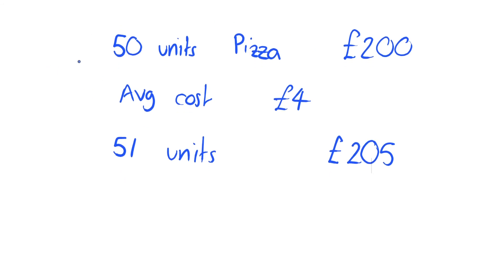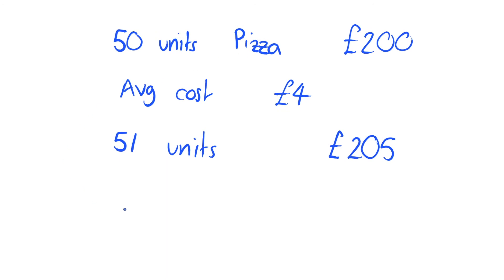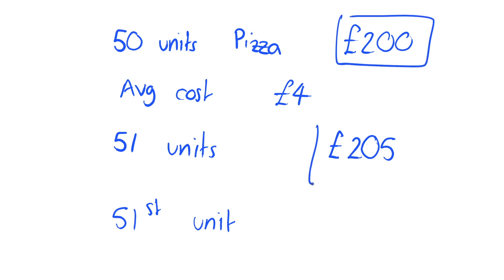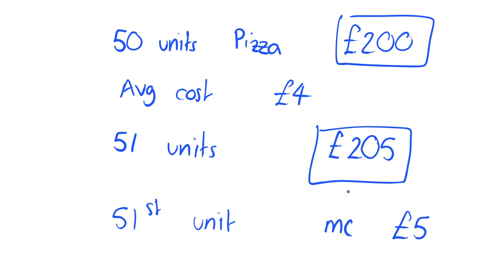So, what is the marginal cost — what is the cost of producing the 51st pizza? Well, it costs £200 to produce 50, it costs £205 to produce 51 units. So our marginal cost, or MC, is going to be £5 for producing the 51st pizza.